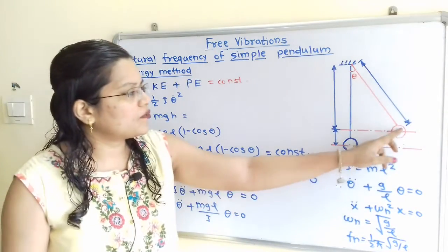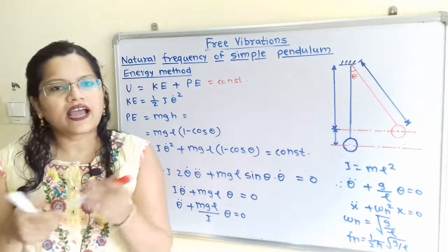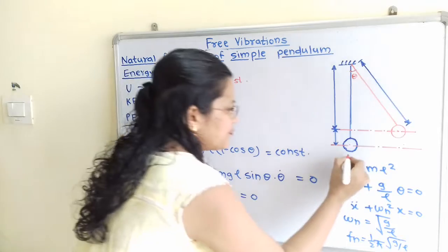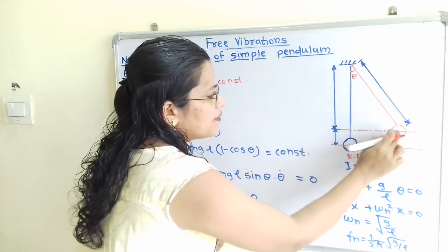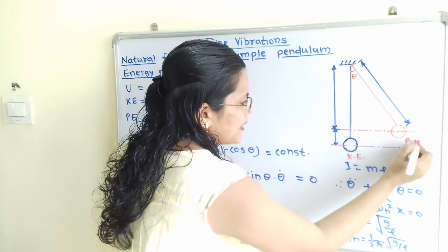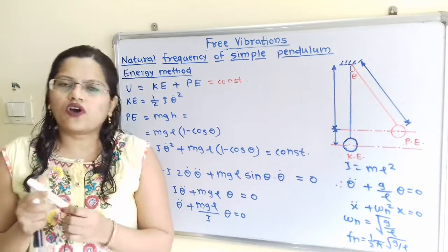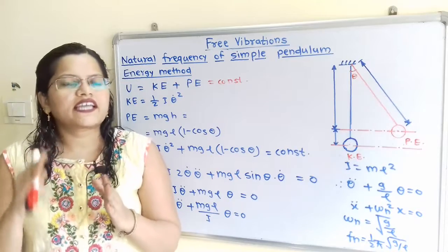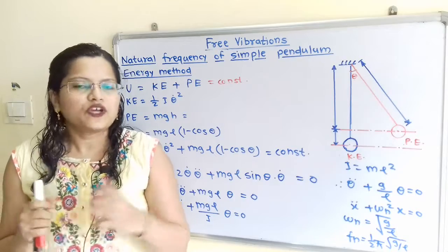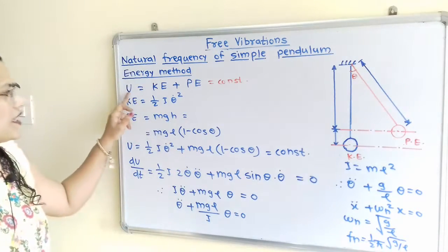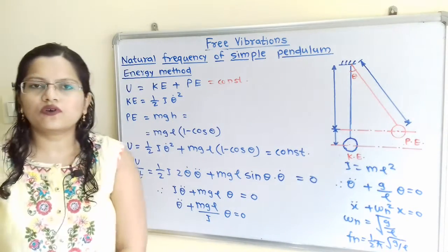When the pendulum oscillates on both sides of its mean position, kinetic energy is maximum at the mean position, and when it is displaced through an angle theta at the extreme end, potential energy is maximum. According to the law of conservation of energy, energy can neither be created nor destroyed, so total energy U equals kinetic energy plus potential energy, which equals a constant.